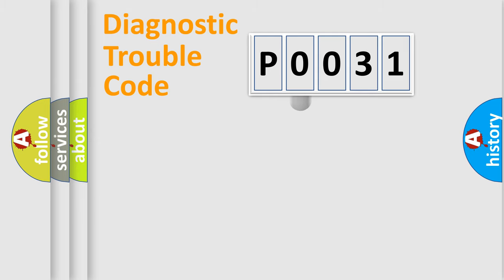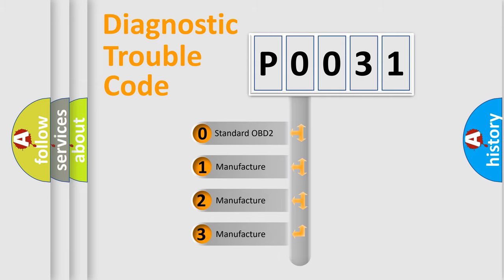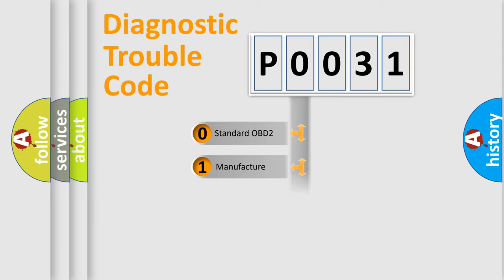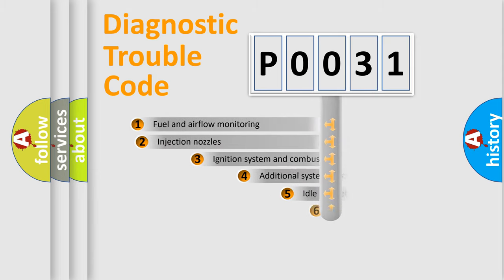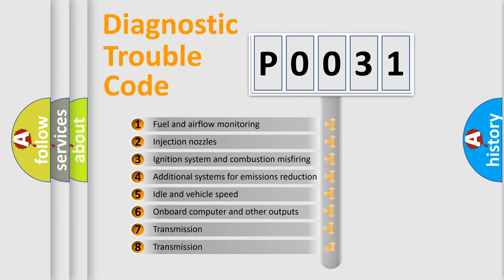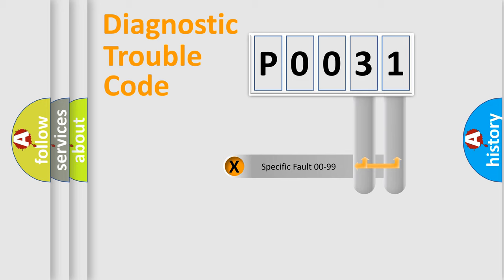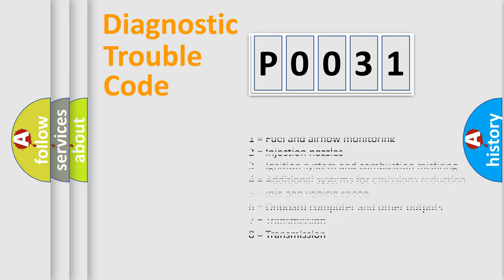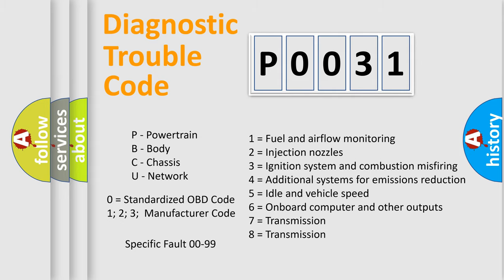This distribution is defined in the first character of the code. If the second character is expressed as zero, it is a standardized error. In the case of numbers 1, 2, or 3, it is a more specific manufacturer-defined error. The third character specifies a subset of errors. This distribution is valid only for the standardized DTC code, and only the last two characters define the specific fault of the group.